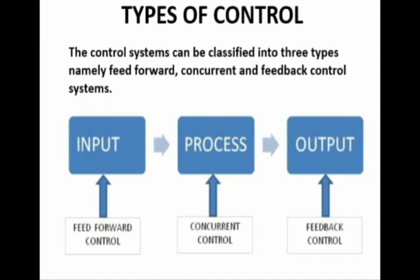So what is type of control? Type of control is the different ways in which we can control the performance of an organization. In general, the types of control can be classified into three different types, namely feed forward control, concurrent control, and feedback control. This classification is based upon the elements to be controlled and the stages at which the control can be exercised in order to get the desired outcome.